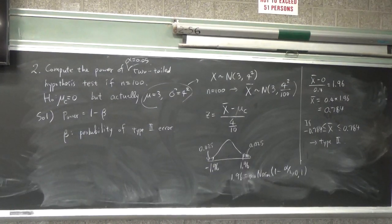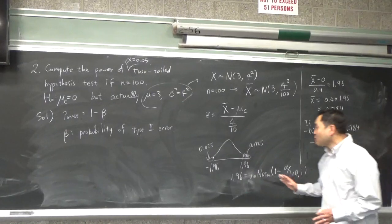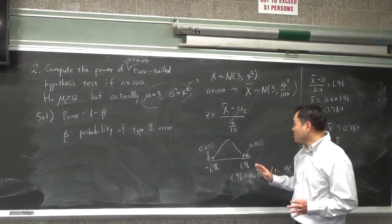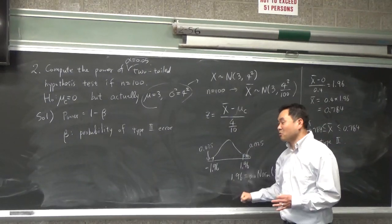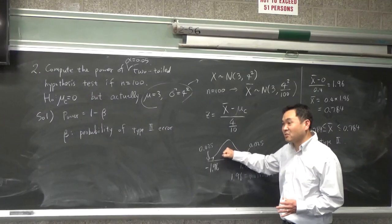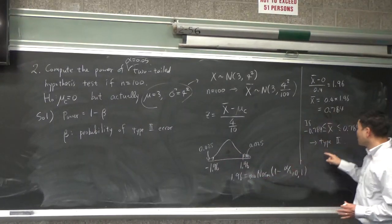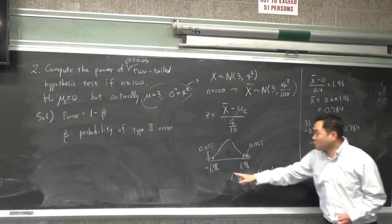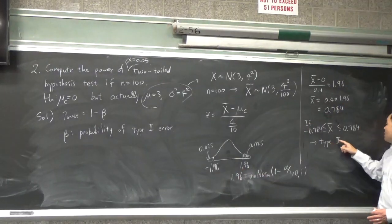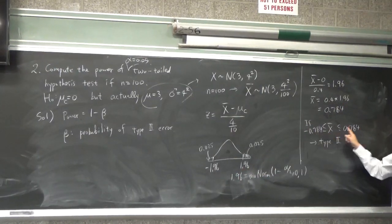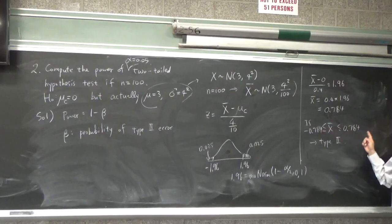This is a bit challenging to think because you're not trying to reject the null. You're really thinking about when does it fail to reject the null. It fails when your test statistic belongs between here to there, and you have to calculate the values that correspond to these two values, and if x bar belongs between these two, then yes?